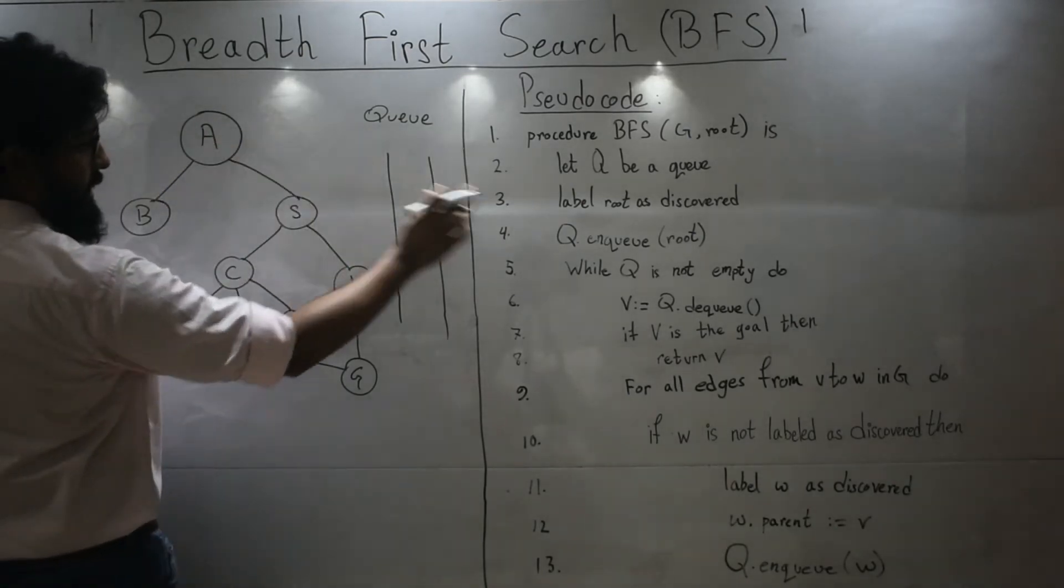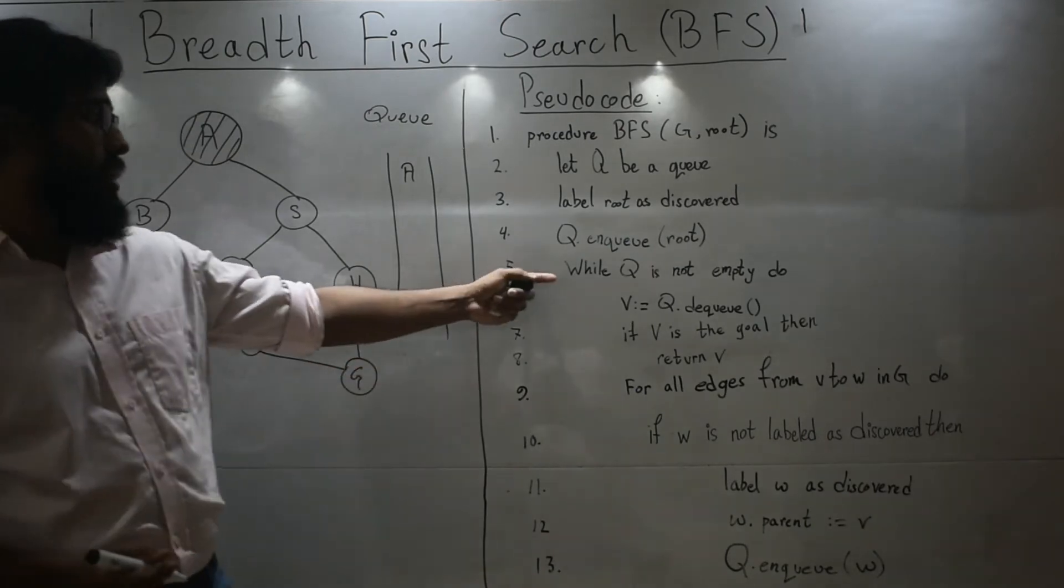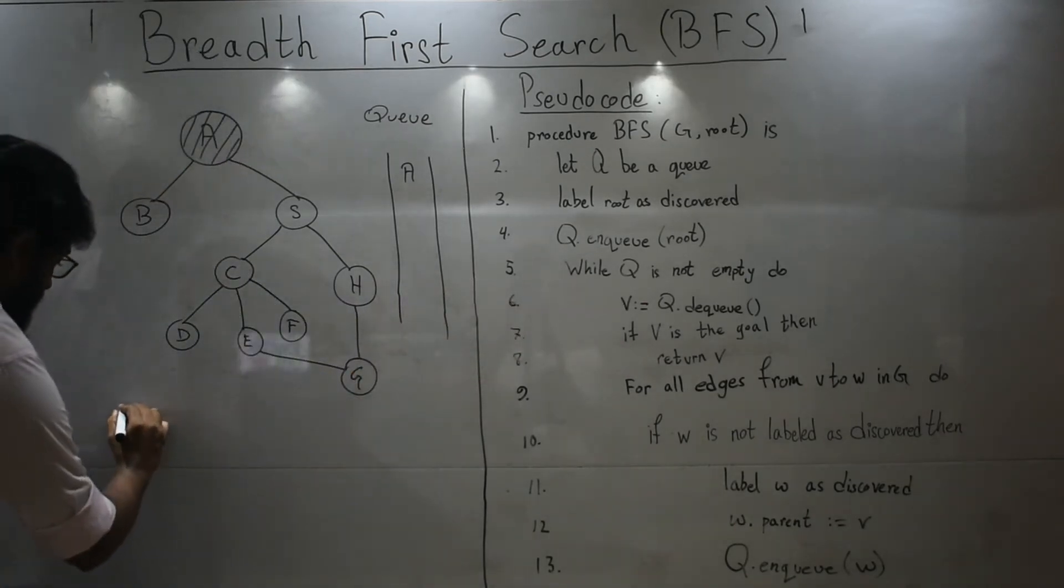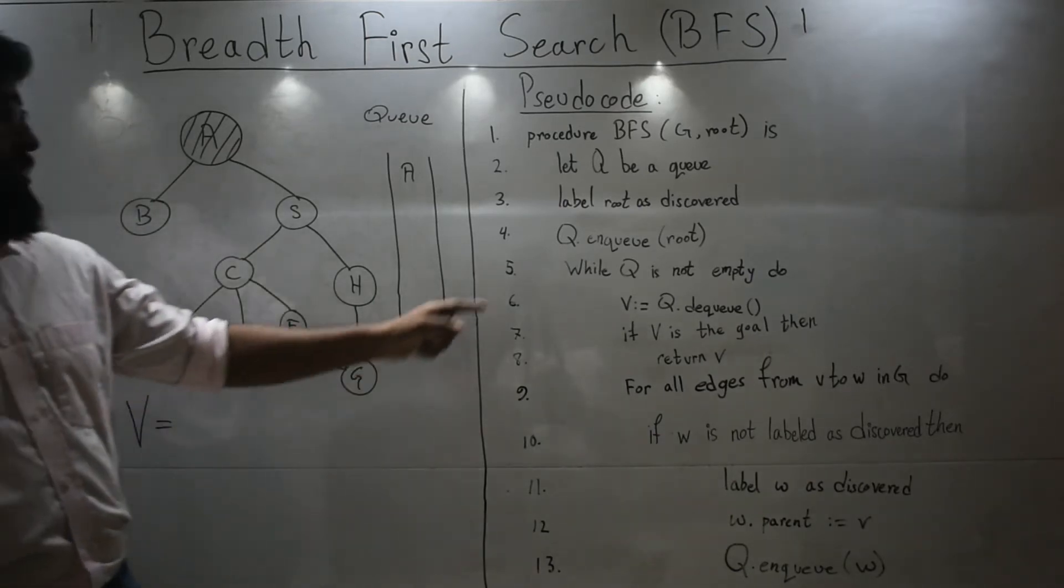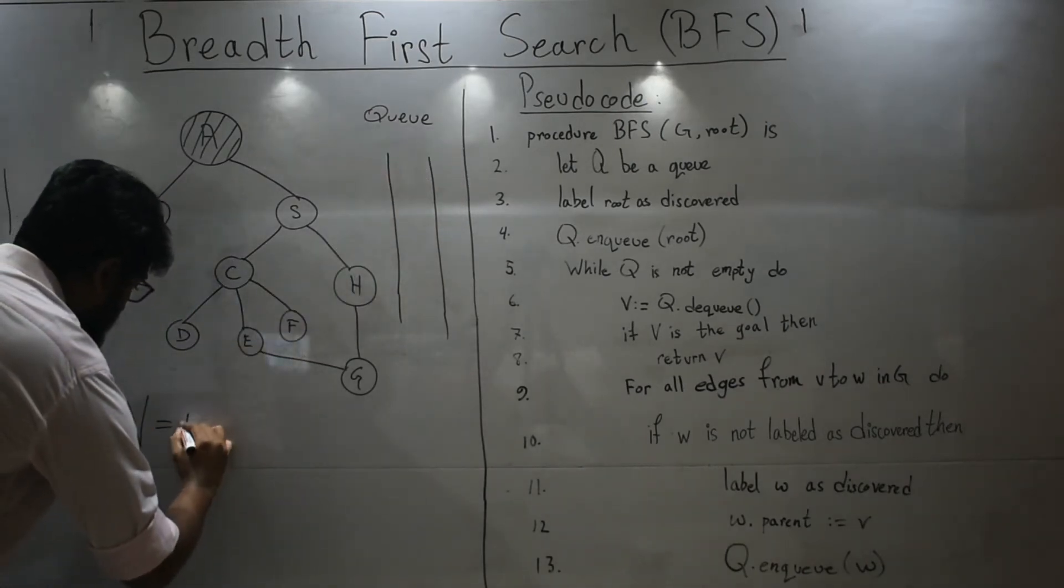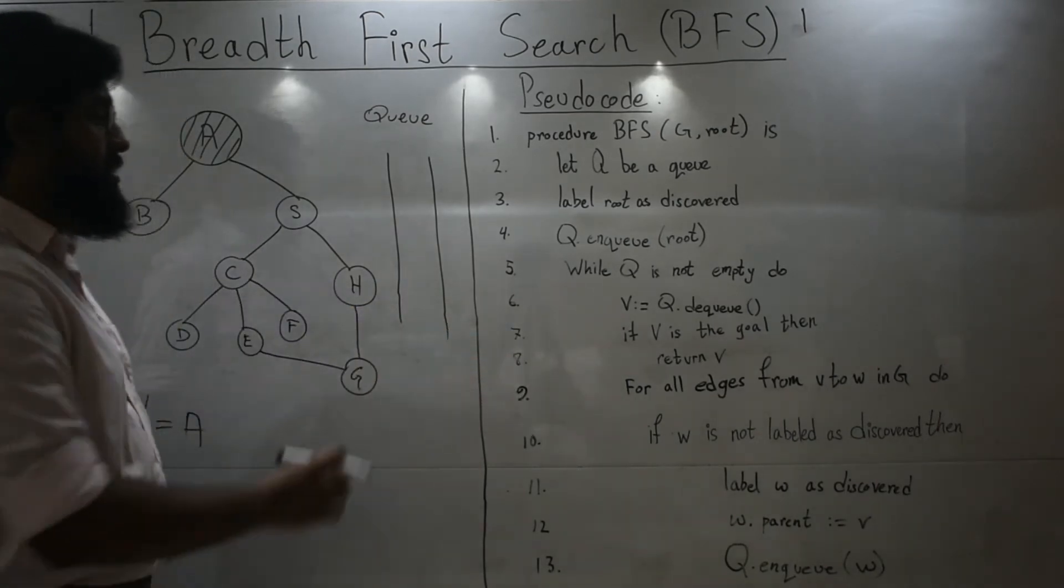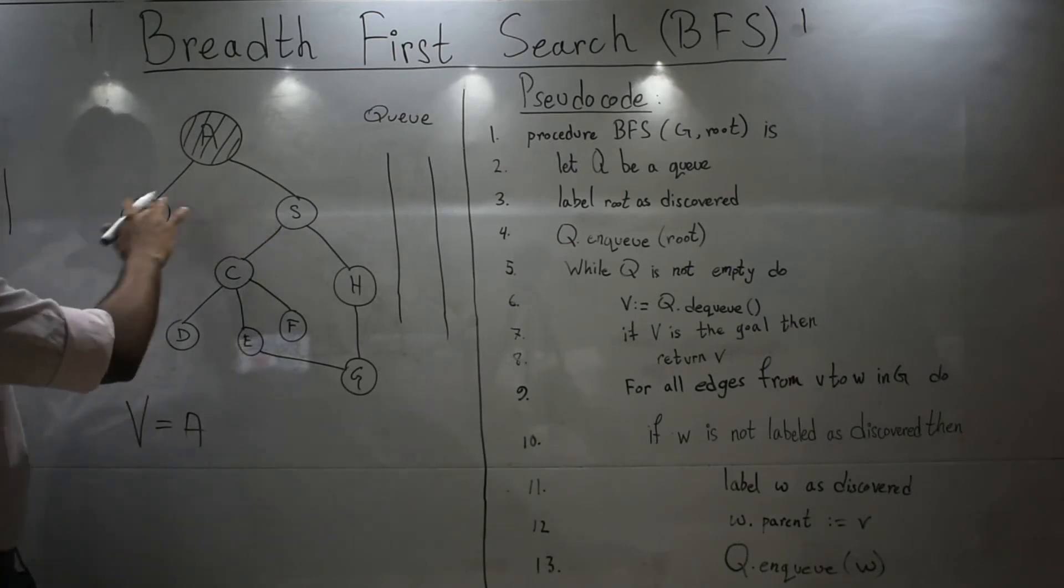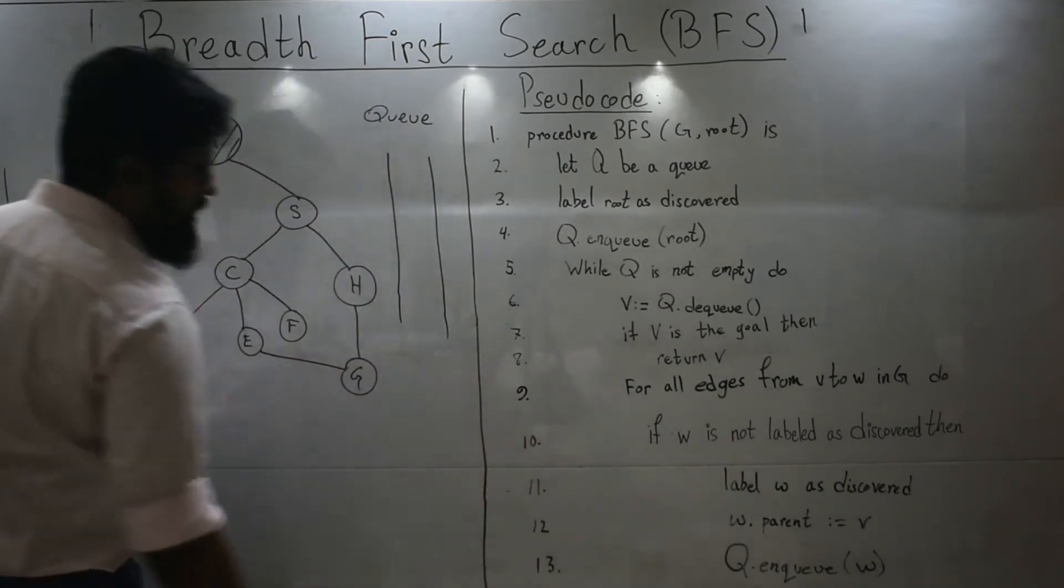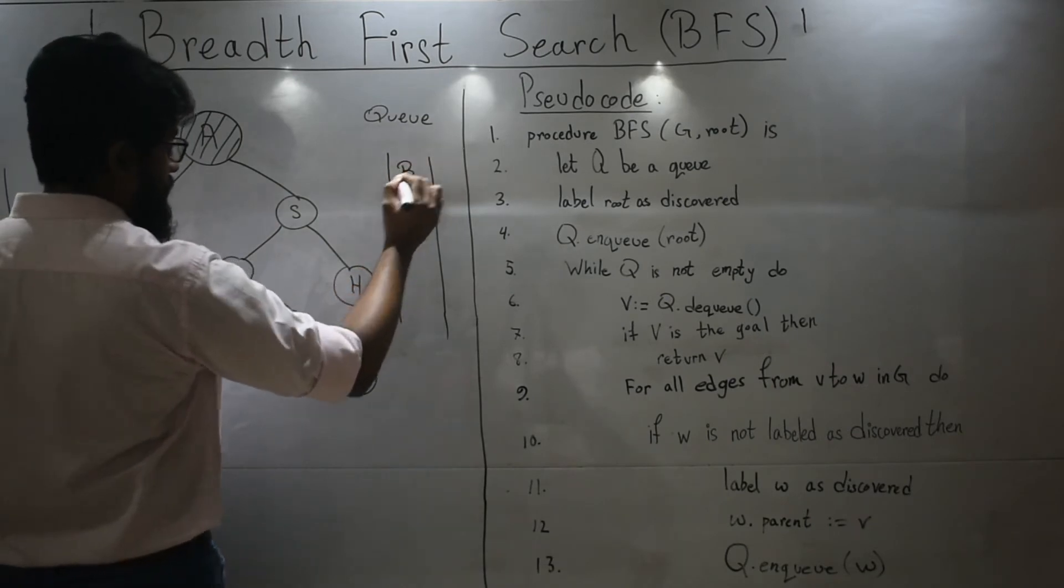So let's label the root node as discovered and enqueue. First, let's discover it and then enqueue. While the queue is not empty, it's not empty. Let's get in this loop. Dequeue and put the value in V. So let's denote a V variable over here. So dequeue from here and put the value over here. Is A the goal node? No. Then for all edges from A to its neighbors or adjacent nodes, we'll have to discover them. If they are not discovered, we will discover them and we will enqueue them. Let's discover this. Enqueue. We're done.